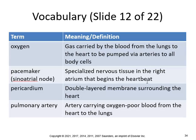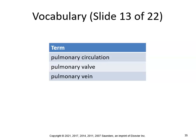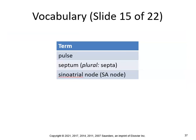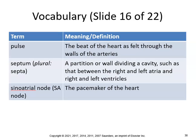Oxygen is the gas carried by blood from the lungs to the heart to be pumped by arteries to all body cells. The pacemaker (SA node) is specialized nervous tissue in the right atrium that begins the heartbeat. The pericardium is the double-layered membrane surrounding the heart. The pulmonary artery carries oxygen-poor blood from the heart to the lungs. Pulmonary circulation is the flow of blood from the heart to the lungs and back. The pulmonary valve is between the right ventricle and pulmonary artery. The pulmonary vein carries oxygenated blood from the lungs to the left atrium.